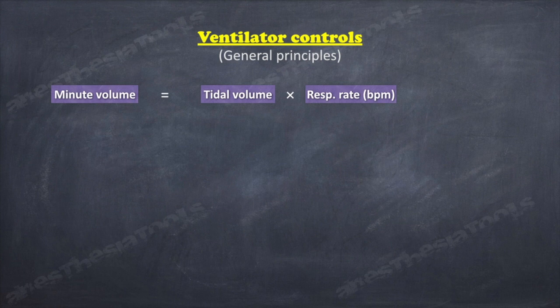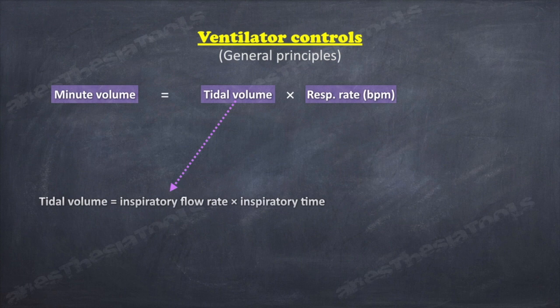For control ventilation, the equation can have only two user-defined variables, the third being dependent on the other two. The tidal volume is derived from the inspiratory flow delivered by the ventilator and the time over which this is delivered.